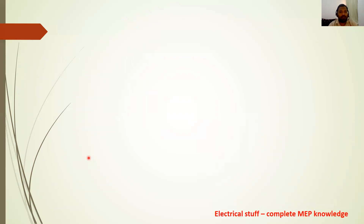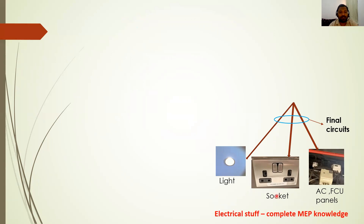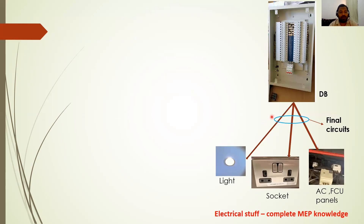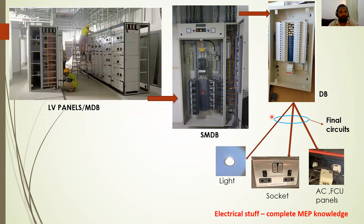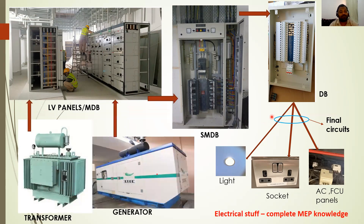Practically, the final loads — lights, power sockets, and AC FCU panels — are called final circuits. These are fed from distribution boards. Distribution boards are fed from sub-main distribution boards, which are fed from LV panels or main distribution panels. Those panels are fed from the transformers or generator. This is how power is distributed in buildings.